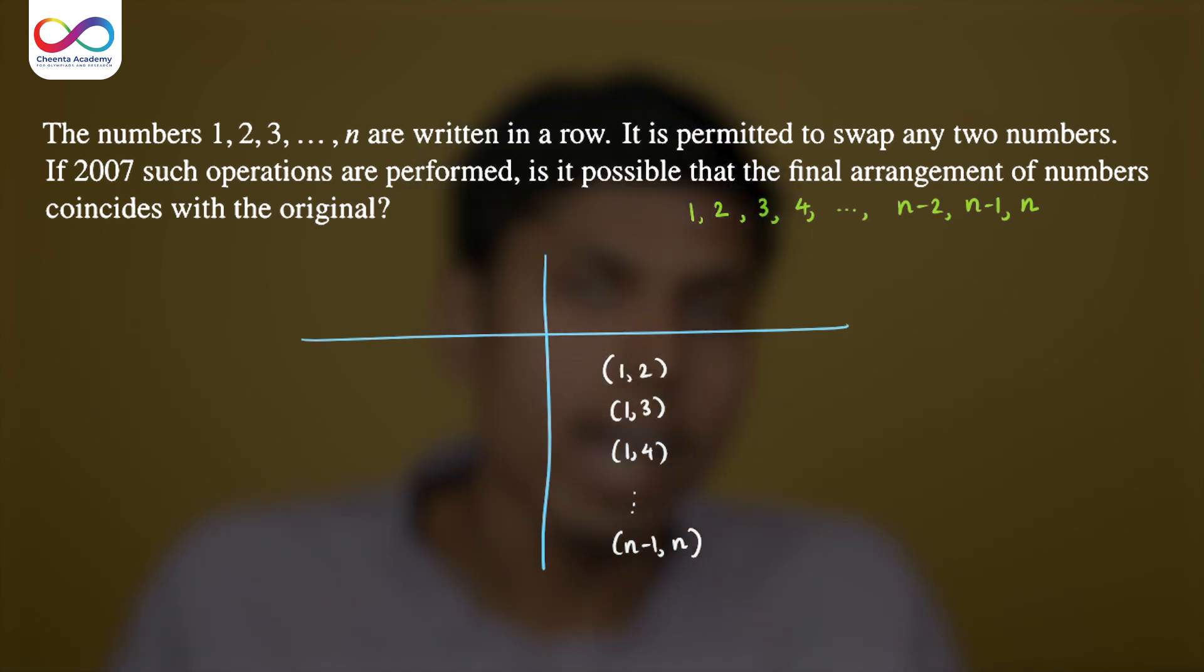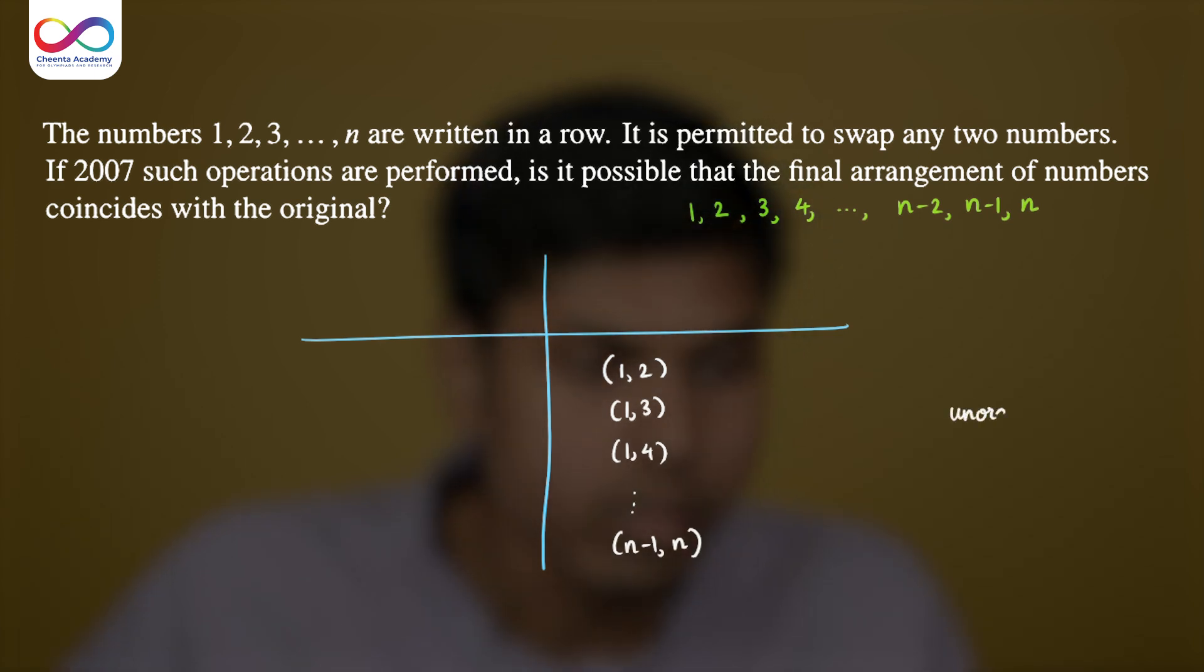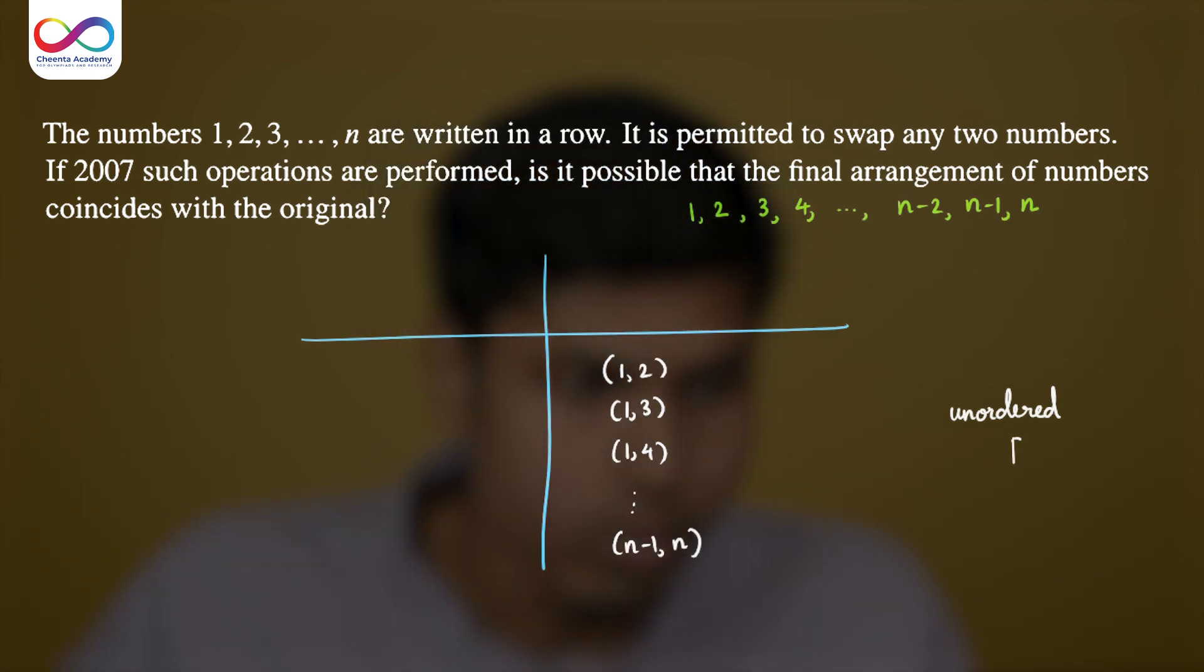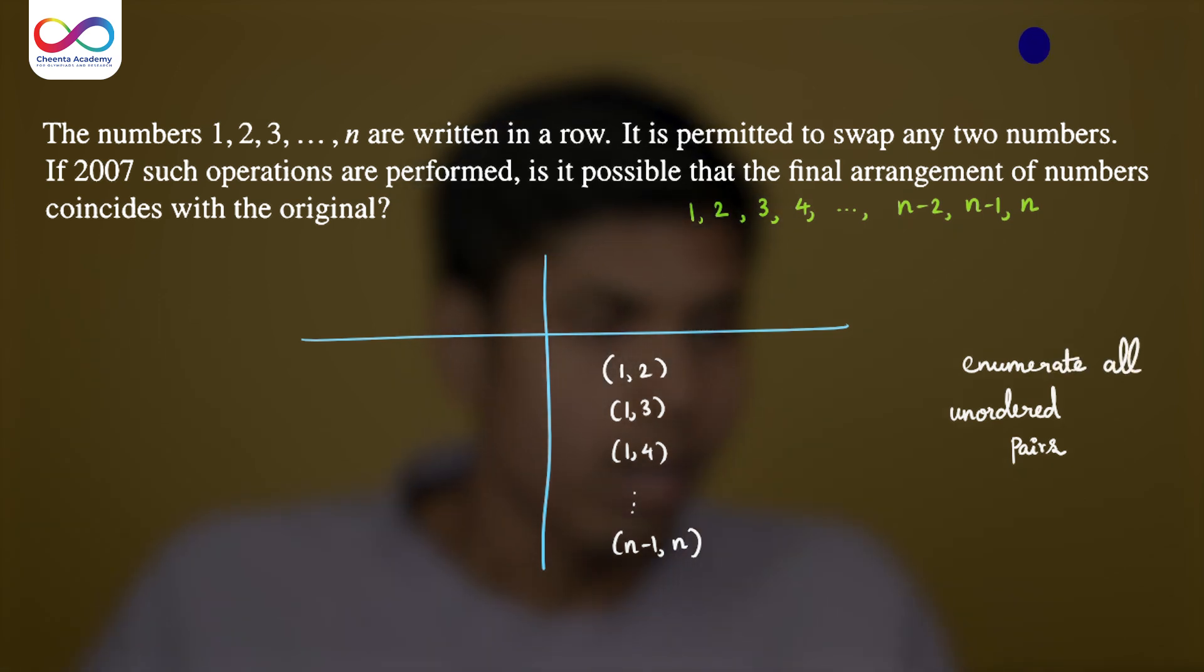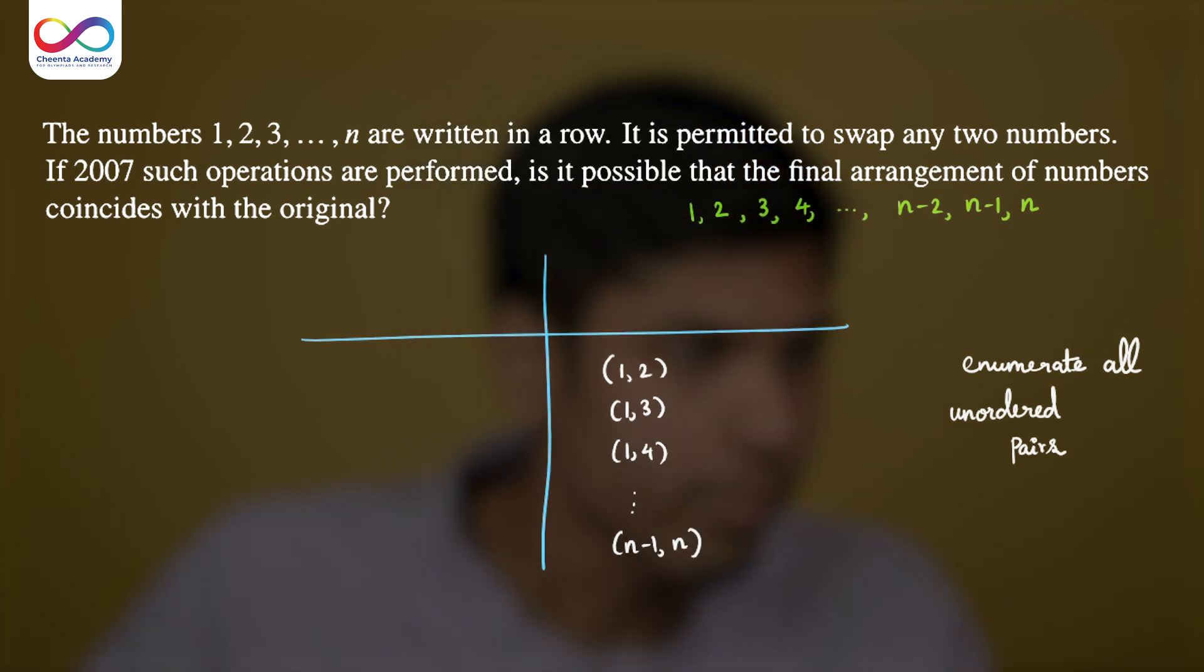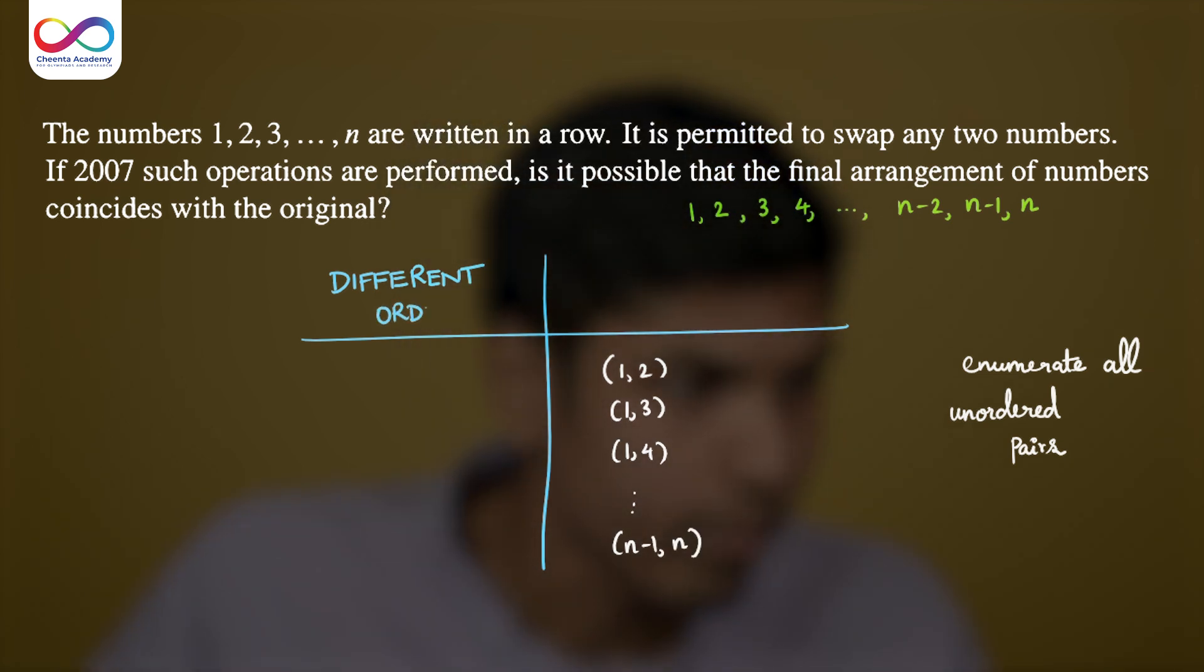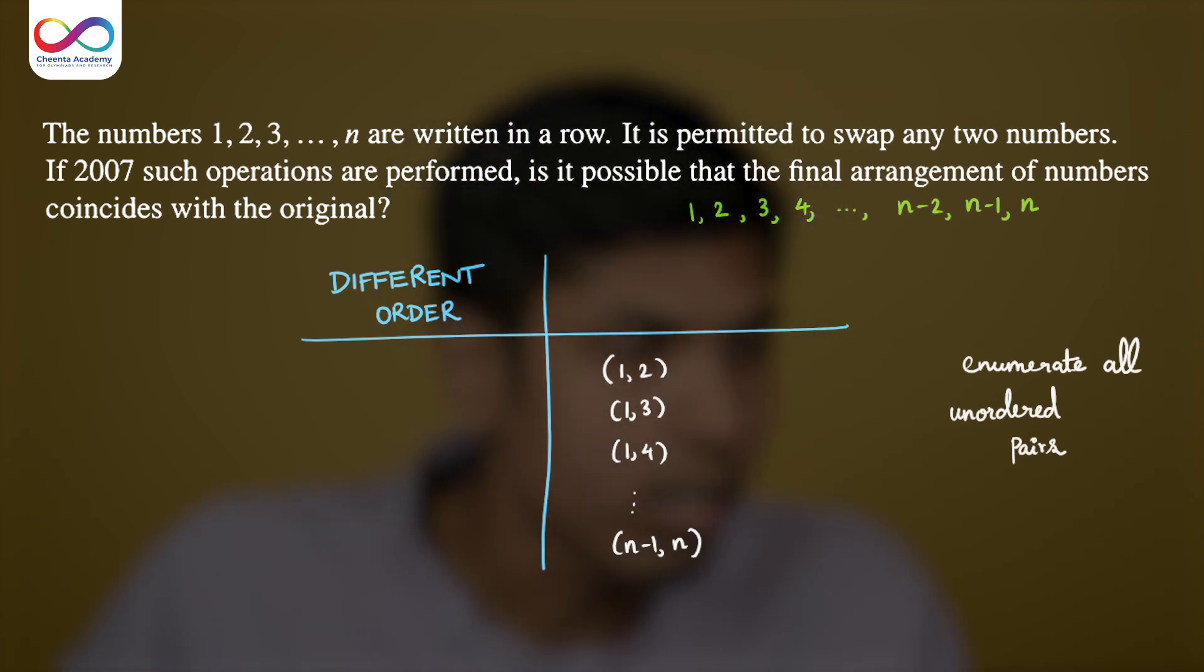You will get n choose 2 number of pairs and remember that these are unordered pairs. That is, we consider 1, 2 same as 2, 1. So you need not write it twice. We enumerate all the unordered pairs. And what are these two columns? The first column describes the different ordering of the numbers in the pair with respect to the sequence under consideration. So, different order. Whereas the second column corresponds to same order.